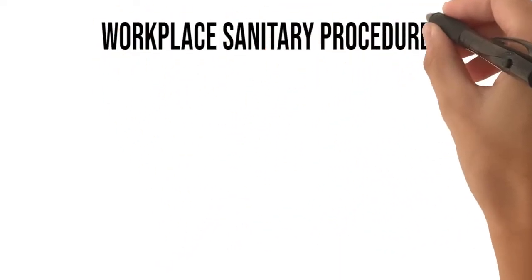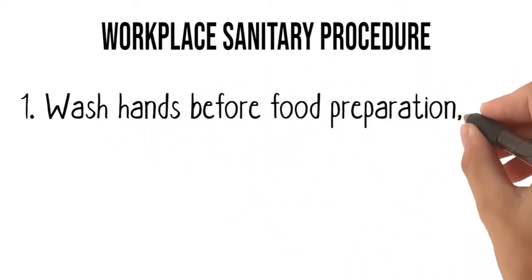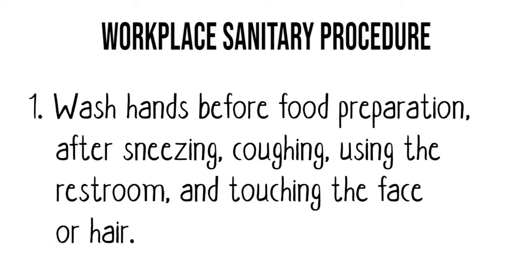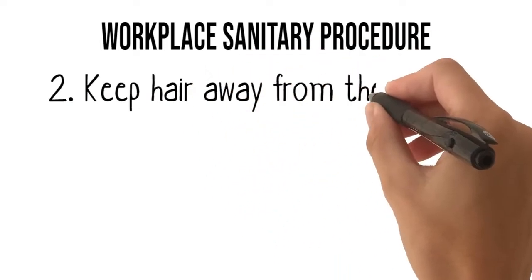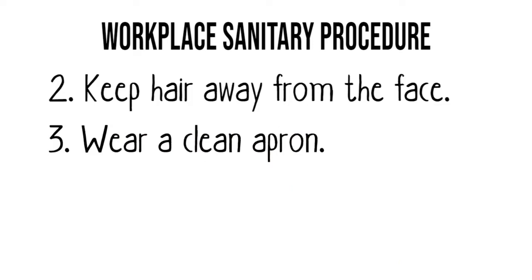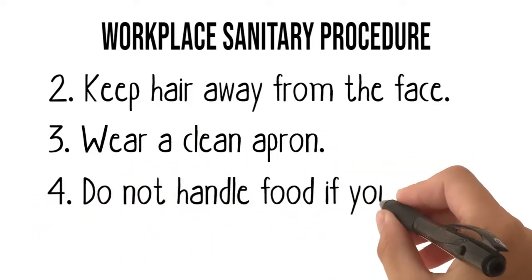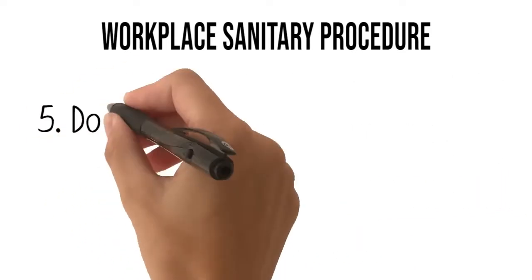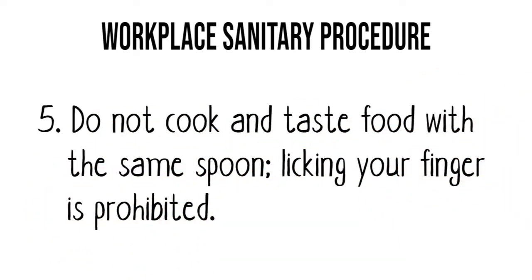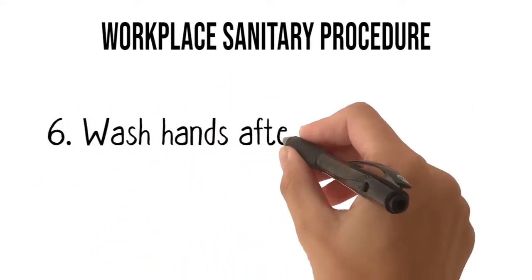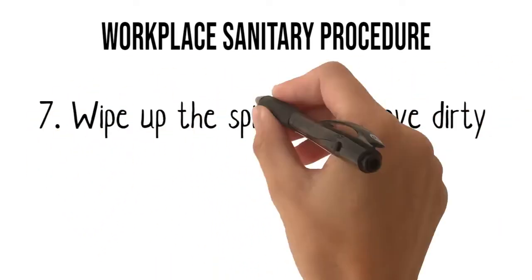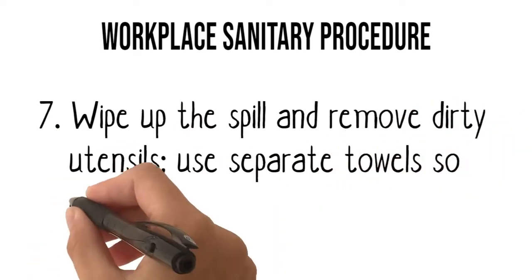Workplace Sanitary Procedures. 1. Wash hands before food preparation, after sneezing, coughing, using the restroom, and touching the face or hair. 2. Keep hair away from the face. 3. Wear a clean apron. 4. Do not handle food if you have an open cut or sore. 5. Do not cook and taste food with the same spoon; licking your finger is prohibited. 6. Wash hands after handling raw meats and eggs. 7. Wipe up spills and remove dirty utensils; use separate towels so dishes do not get bacteria.